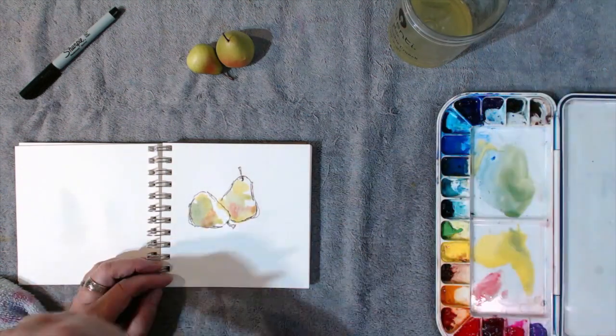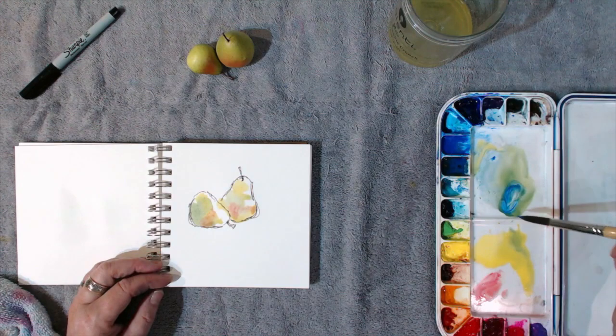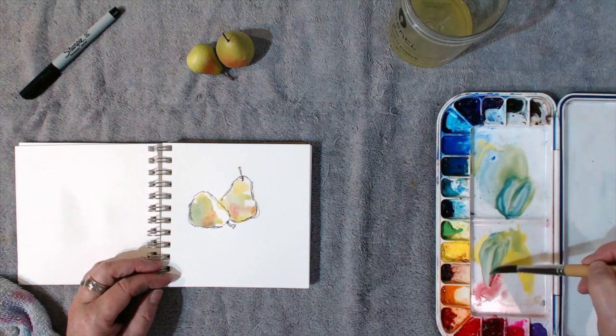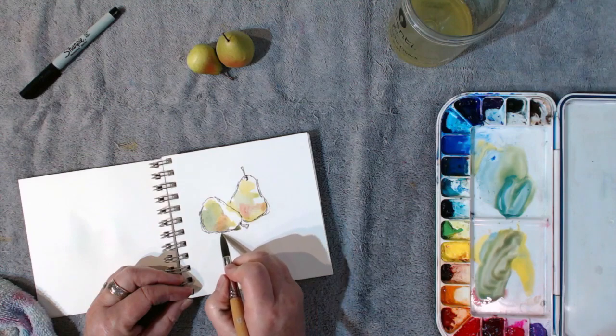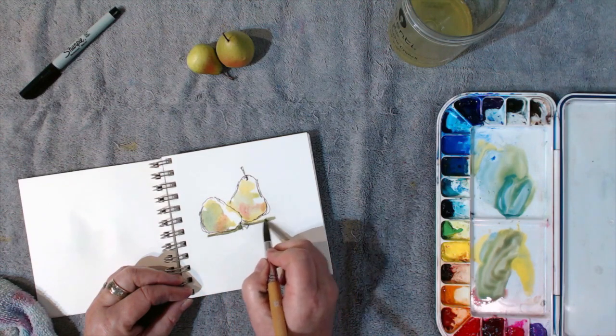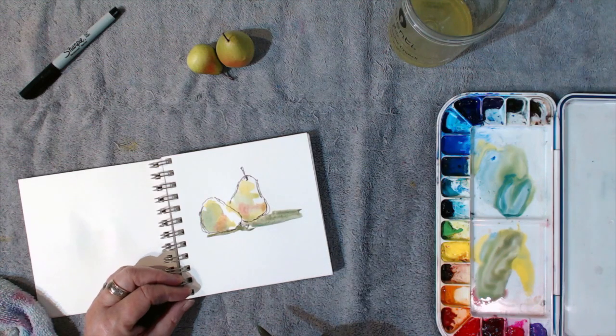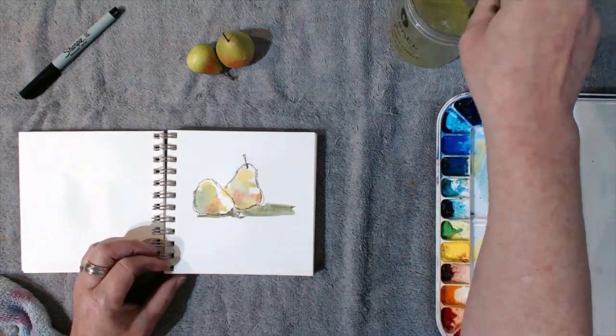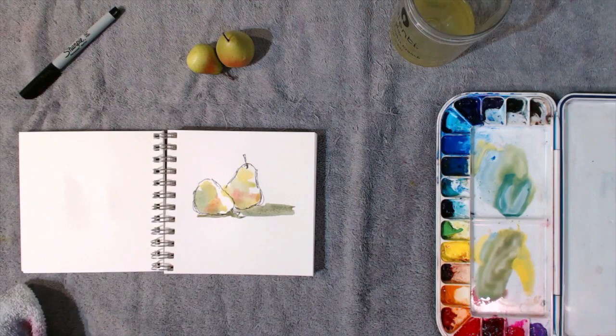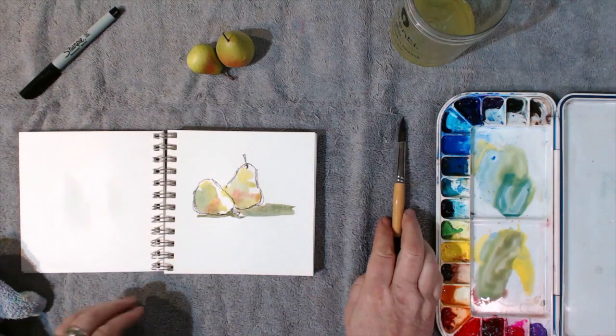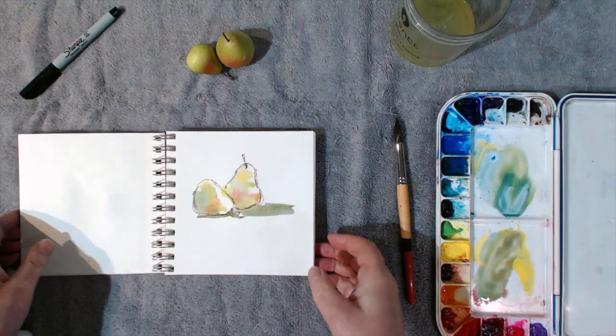Then maybe we'll make a little shadow. Let's mix up a darker green and give it a little bit of a shadow shape so that it has a surface to sit on. It's very very easy to do too much, so try to get yourself to stop before you do too much.